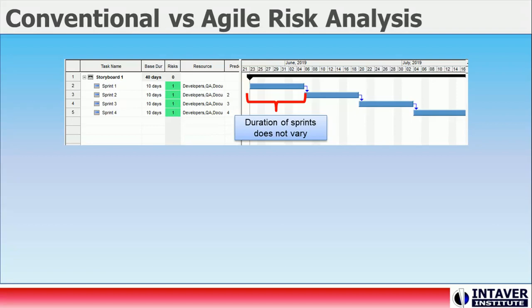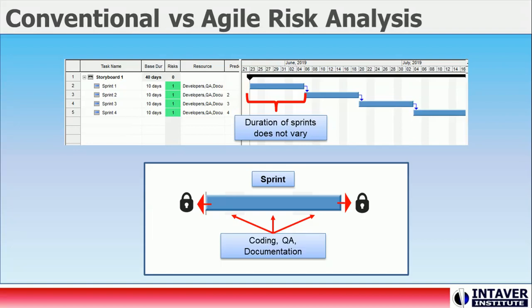In comparison, though Agile projects are subject to similar risks and uncertainties, they use sprints which have a set duration that never varies. Each sprint contains multiple activities, and at the end of each sprint a working product is produced. If the planned work is not completed in a sprint due to underlying risks or uncertainties, it is moved to the next sprint. This process continues until the finished solution is delivered. Agile teams must estimate how many sprints will be required to deliver the final product while accounting for risk events and uncertainties.